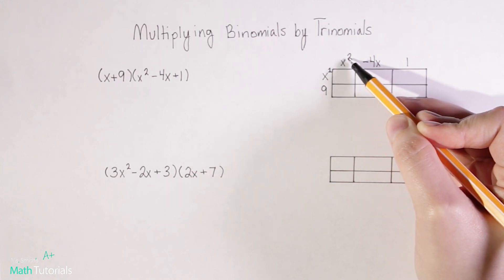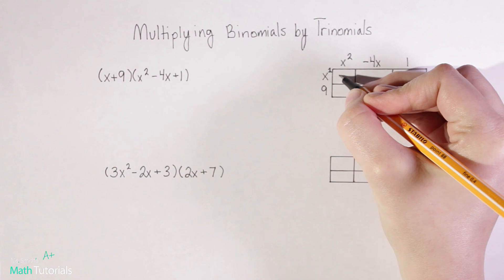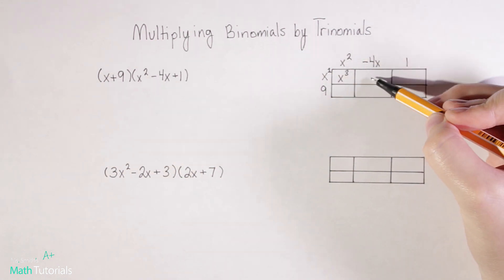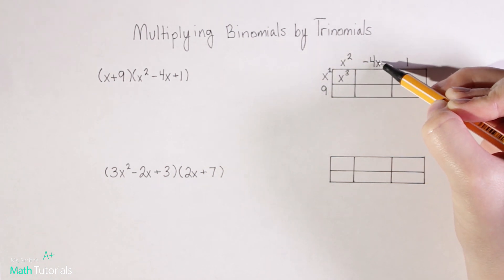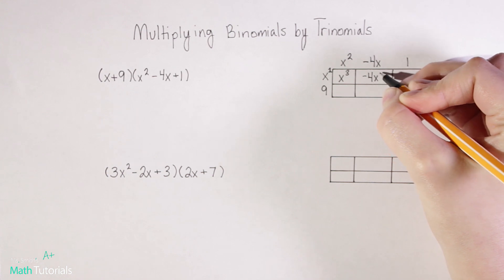So when we multiply straight across, remember that we want to add our exponents. So one plus two is x cubed. Now we move to the next box. So in this case, we would do x times negative four x. So that would give us negative four x squared.